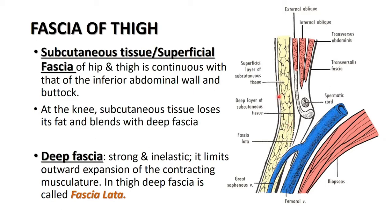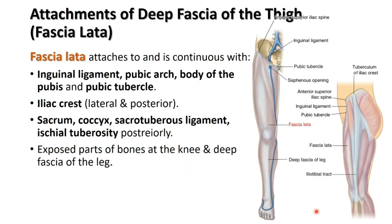Deep fascia lies between the subcutaneous tissue and the muscles. In the thigh, the deep fascia is called fascia lata. It is more strong and inelastic in the thigh, as it has to limit the expansion of the strong thigh muscles during their contraction.